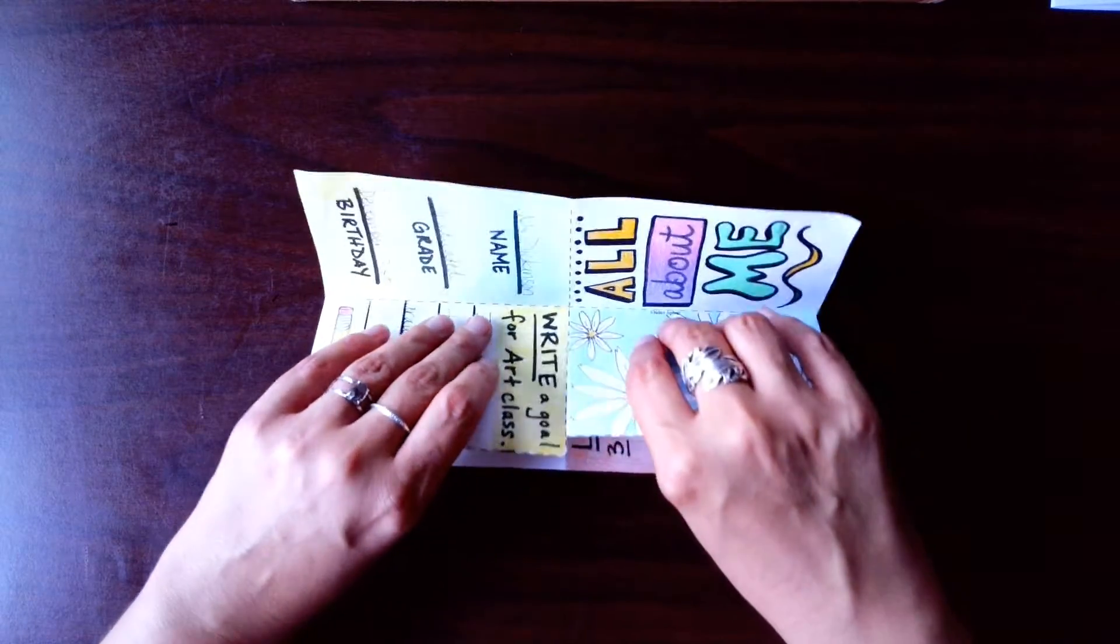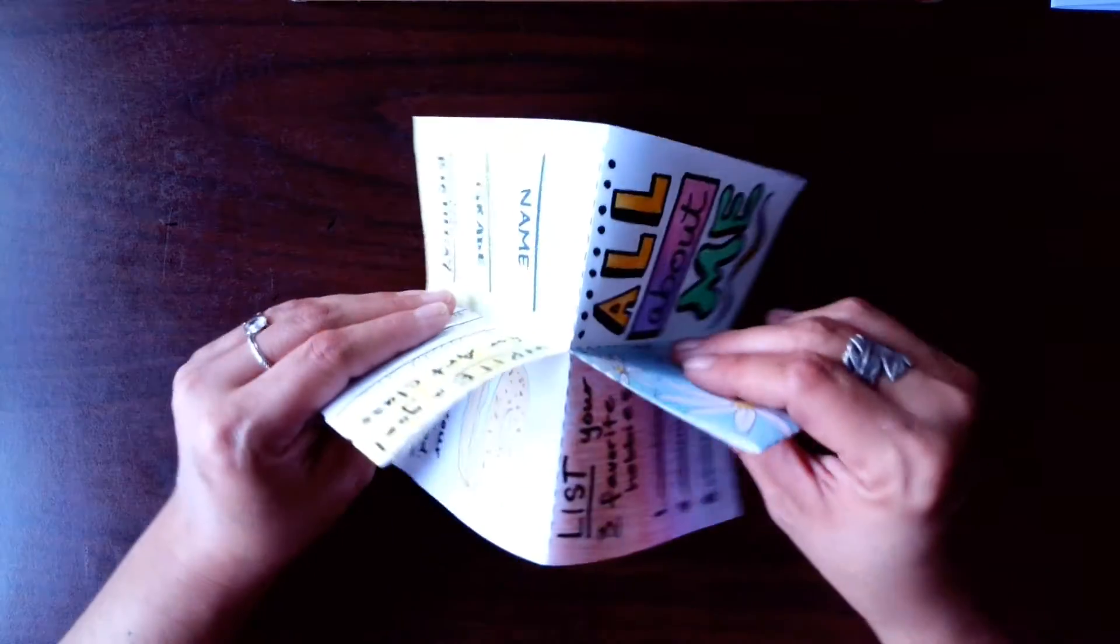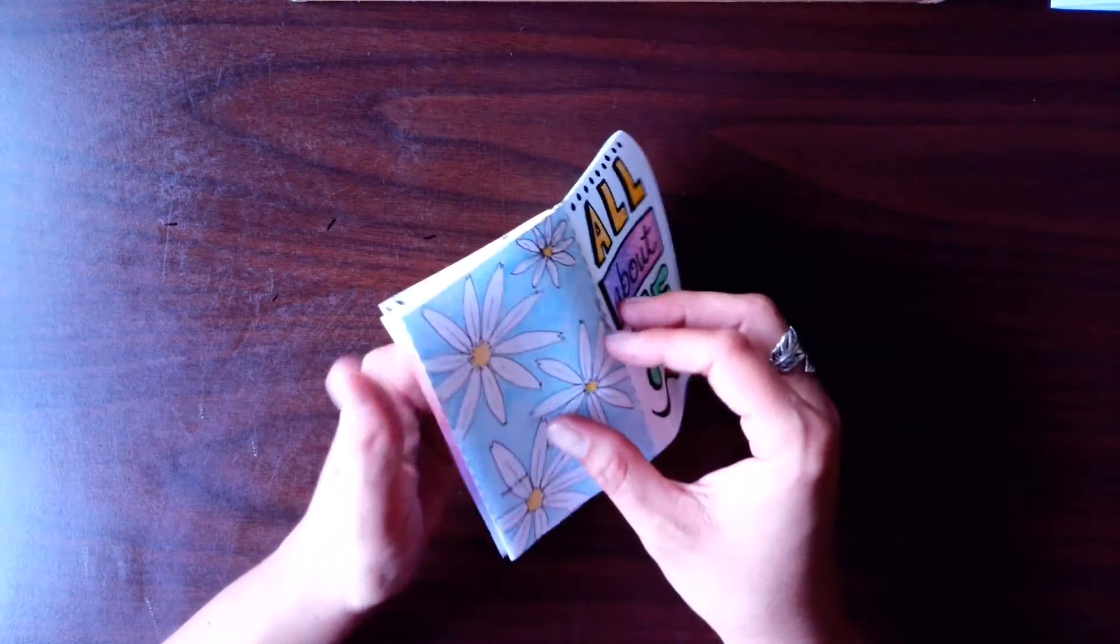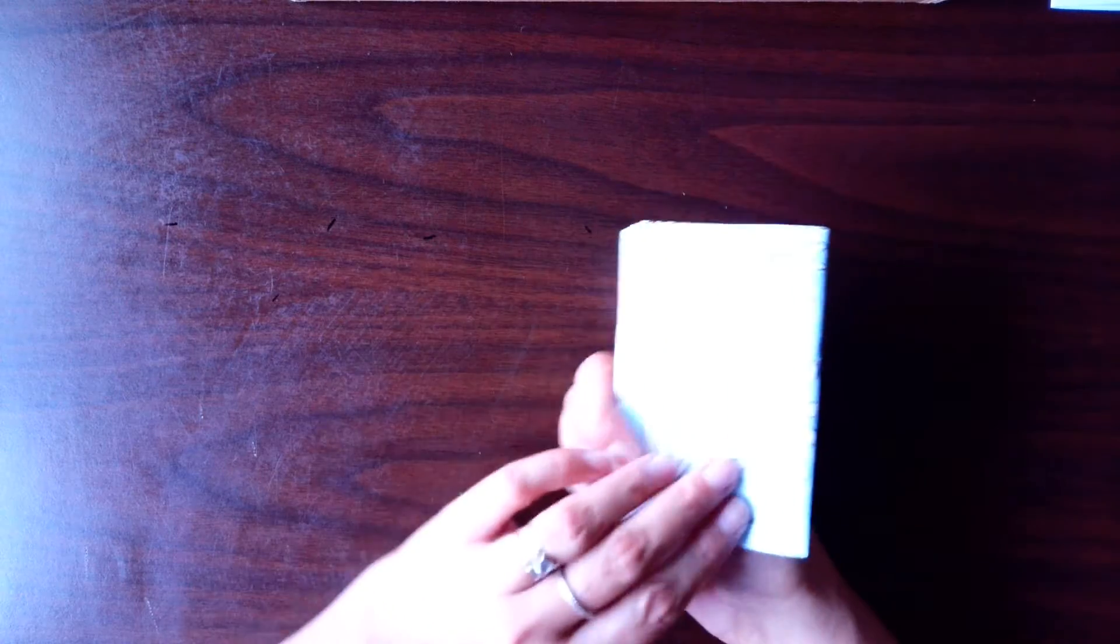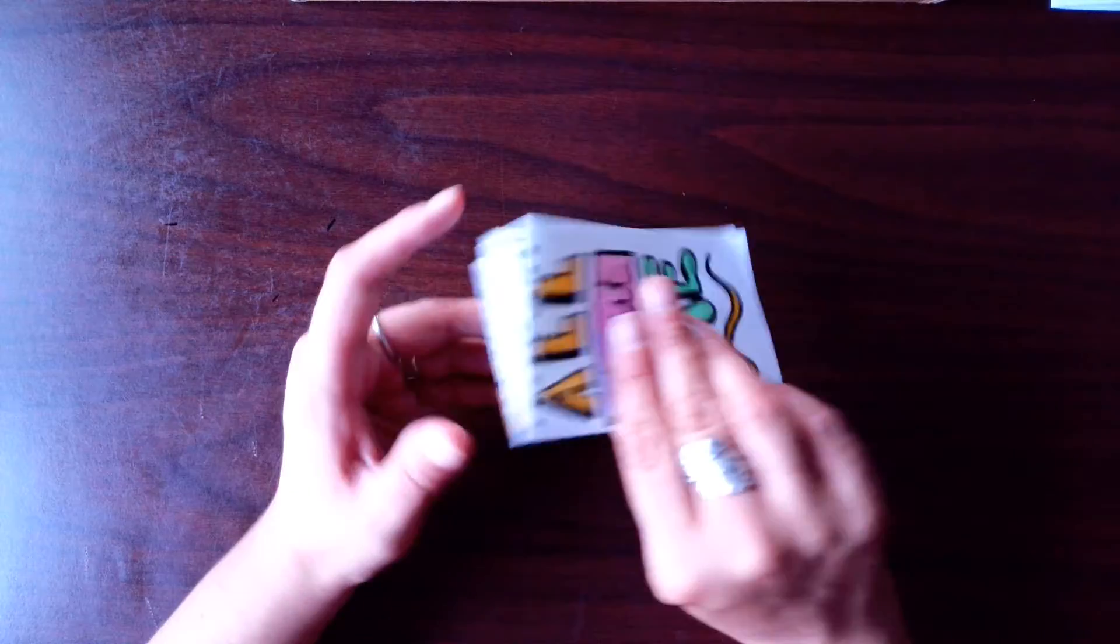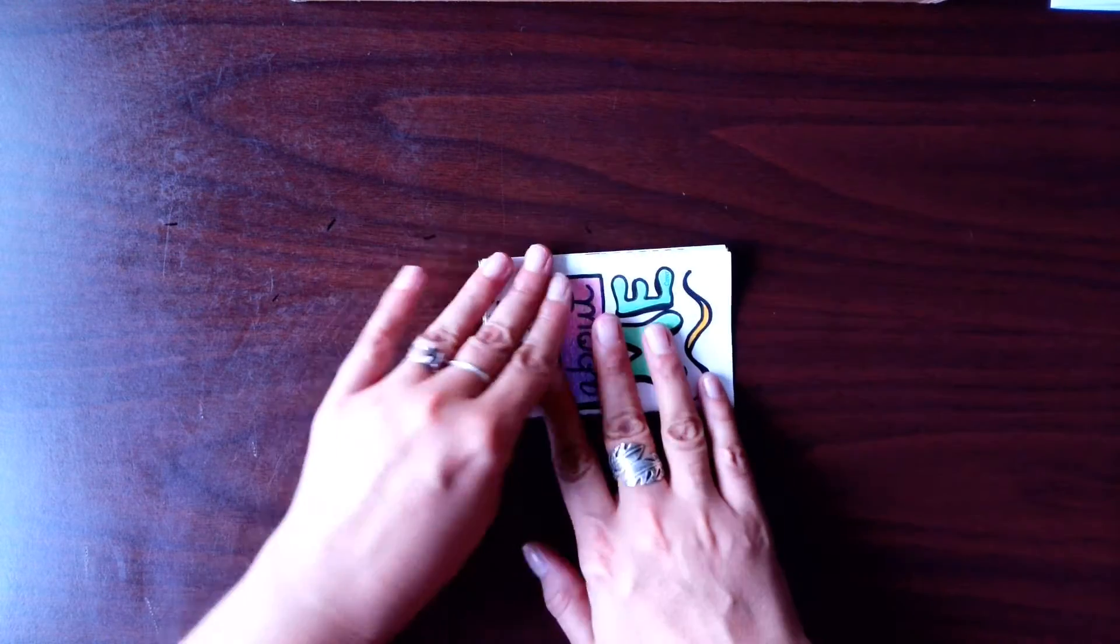Then the last thing you're going to do is flip it over and fold it so the front cover is facing the front and the back cover is facing the back. I usually just kind of lay it down and get a nice crease there.